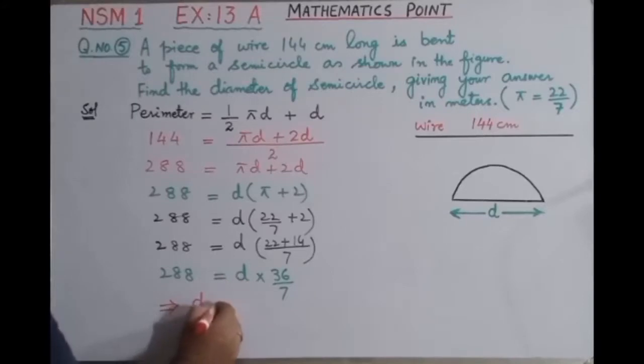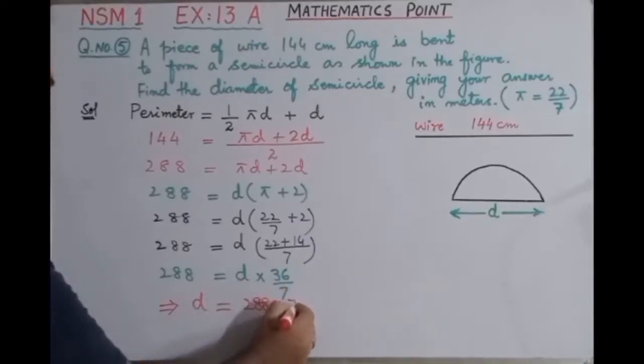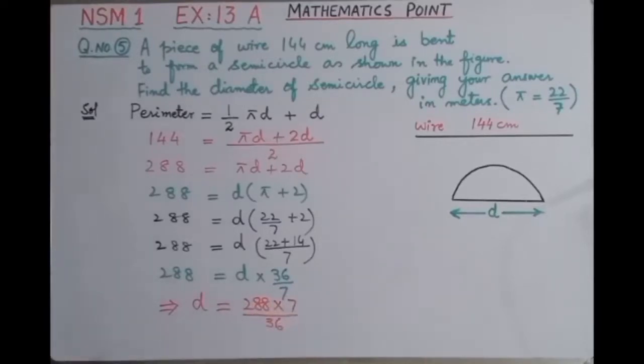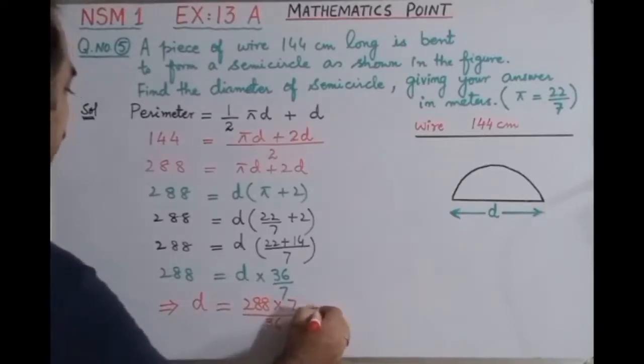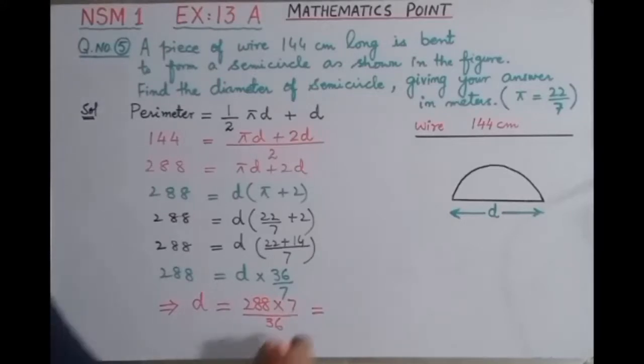If you use the calculator and calculate these values, first multiply 288 with 7 and then divide by 36, you will get the answer is 56 centimeter.